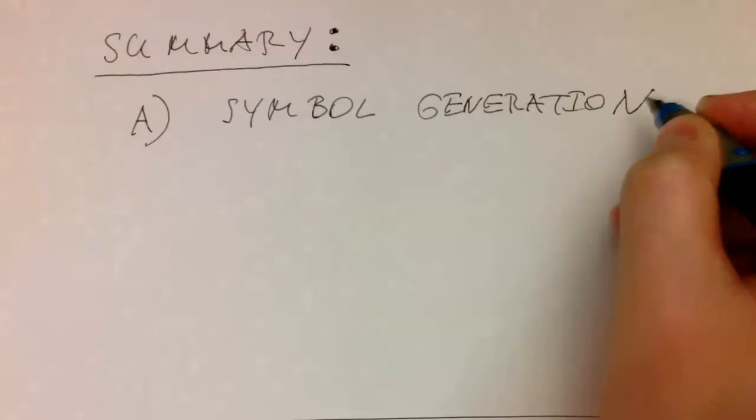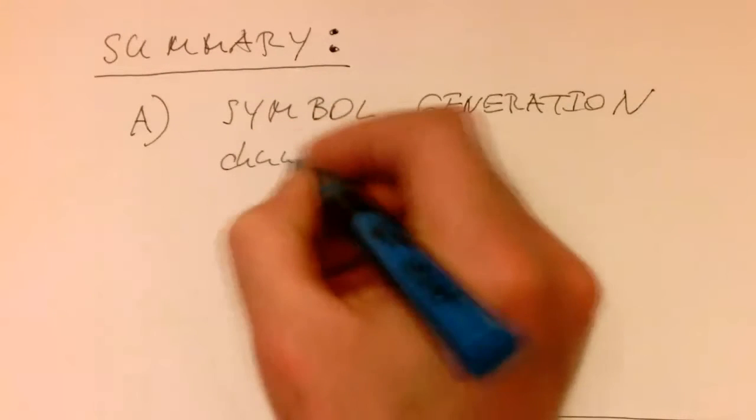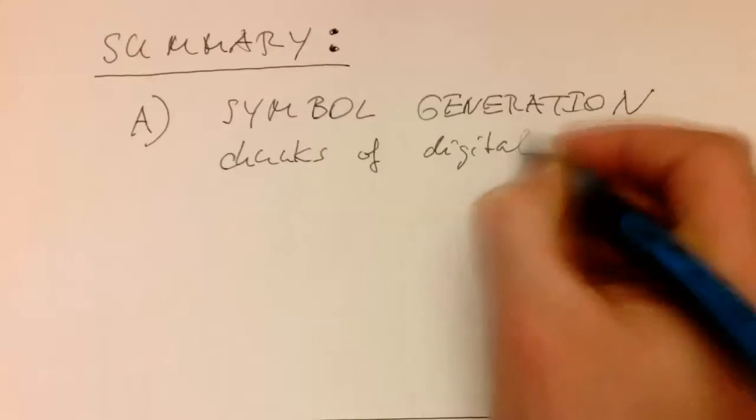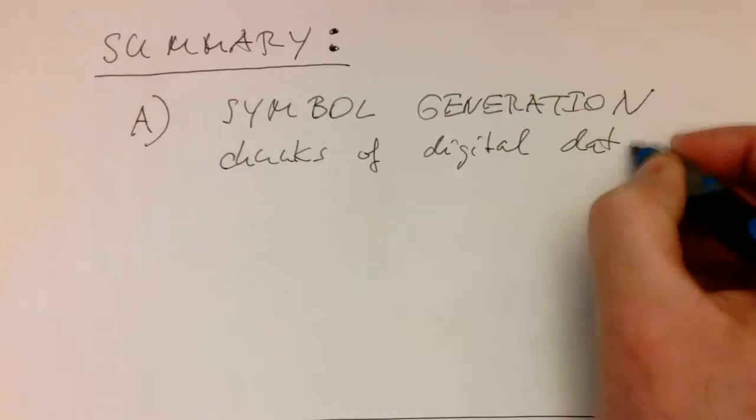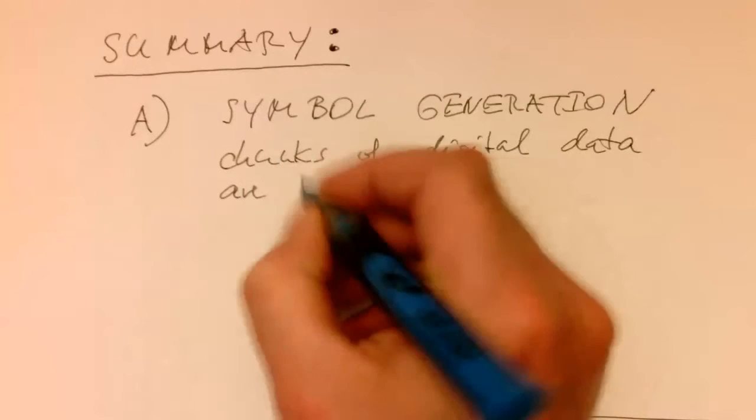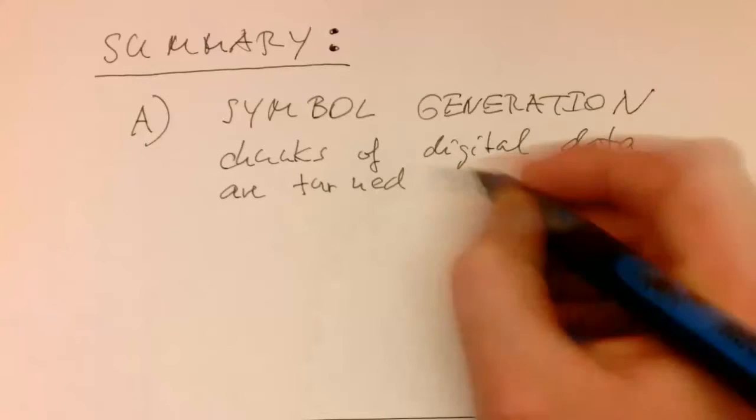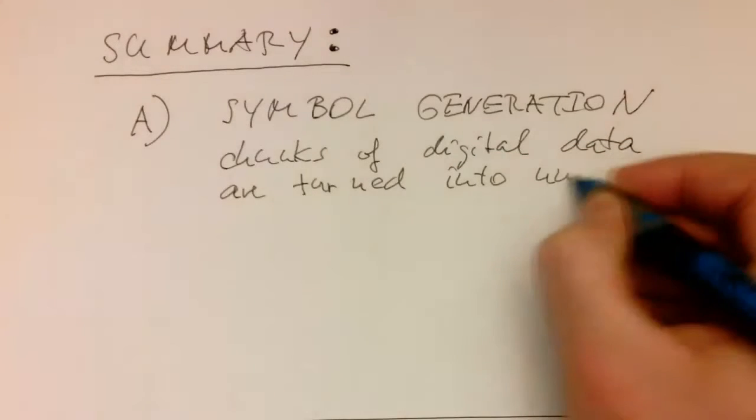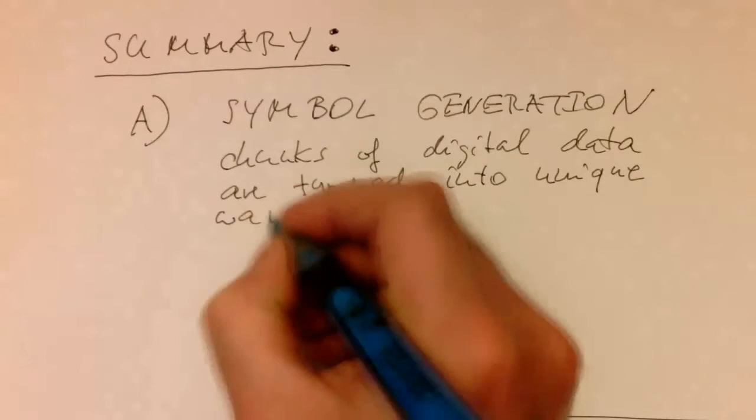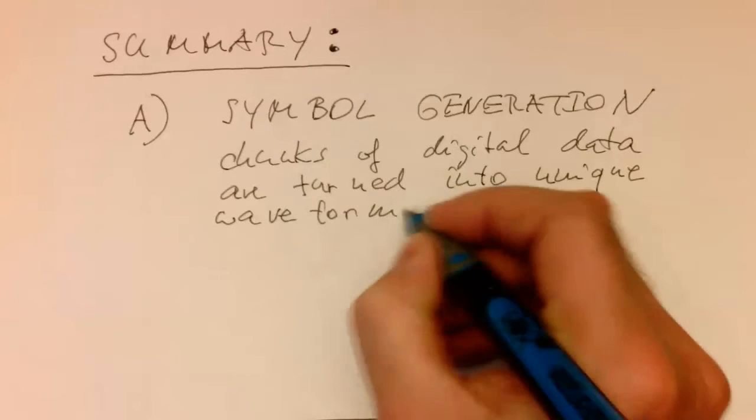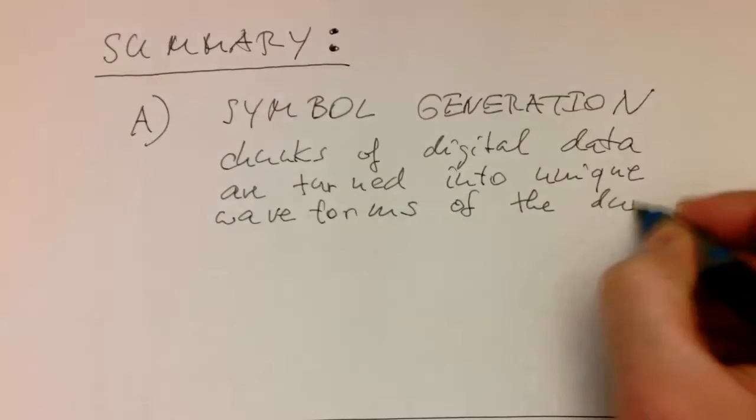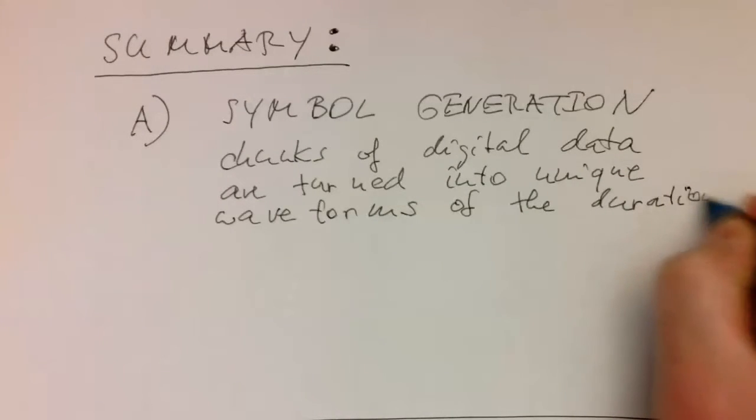Symbol generation generates chunks of digital data, and they are turned into unique waveforms of the duration T.